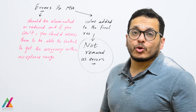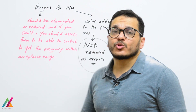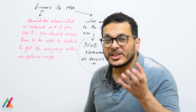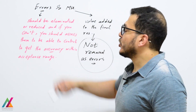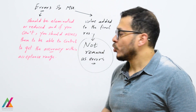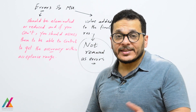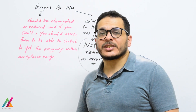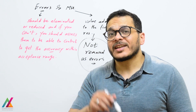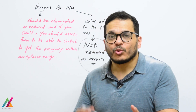Now you can understand the difference between errors and measurement uncertainty. Errors bias the true value and affect the accuracy of the measurement, so they should be removed, eliminated, or reduced. If you cannot eliminate them completely, you should assess them to keep accuracy within the acceptable range. For example, if you spike a sample with 10 micrograms per kilogram and get 5 micrograms per kilogram, your recovery is 50%, which is never acceptable. Errors must be removed to achieve high accuracy.